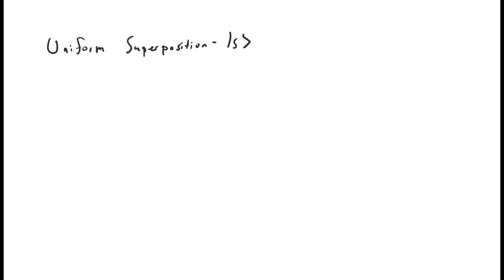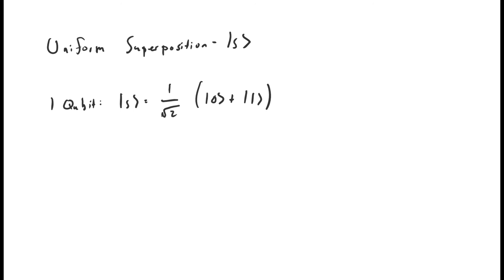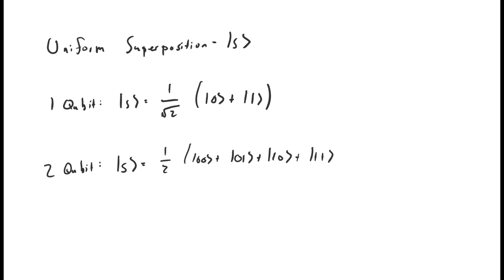Finally, I want to talk about a special state called the uniform superposition, usually denoted by the vector |s⟩. The uniform superposition is a state where the probability of collapsing the state vector to any of the basis vectors is equal — that is, all of the basis vectors have the same amplitude, which is why it's called a uniform superposition. For a single qubit, the uniform superposition is 1/√2 times (|0⟩ + |1⟩), giving a probability of one-half of collapsing to either state. For two qubits, it is 1/2 times (|00⟩ + |01⟩ + |10⟩ + |11⟩), giving a one-quarter probability of collapsing to each classical state.